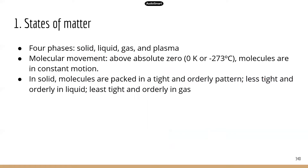So just a quick overview on states of matter. There are four phases: solid, liquid, gas, and plasma. But we only need to worry about the first three phases. Plasma state is a very advanced topic, and we are going to focus on the first three phases.